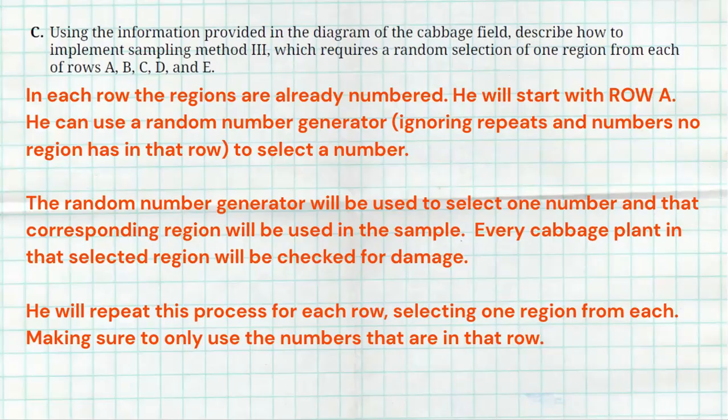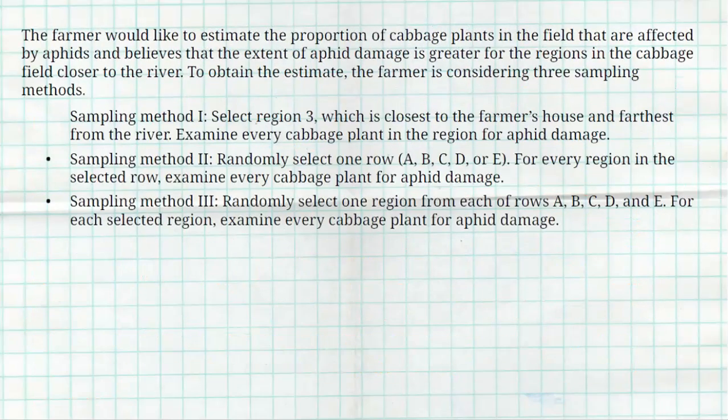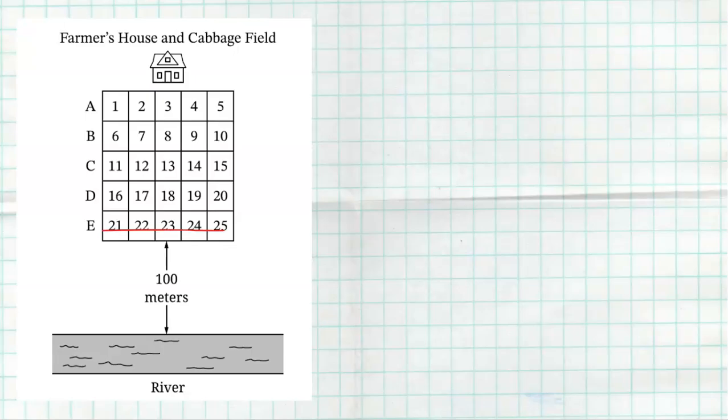Now, this is not the only answer that you could have for C. Another answer you could have as well is that you could use a hat with pieces of paper. You've just got to describe it really, really well. So we get a hat. He's going to put numbers 1, 2, 3, 4, and 5 in that hat, shake it up, pick out 1, and that region will be used from row A. Then he's going to get another hat, 6, 7, 8, 9, 10 go into that hat, pick out 1. As long as you properly describe that, you can get that one pretty good as well.